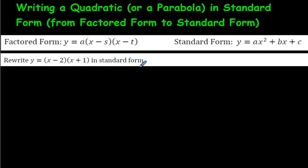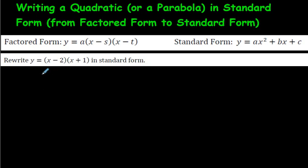What we're going to do is go from factored form into standard form. If we had a question that says 'rewrite this in standard form,' we just have to remember how to multiply two binomials. Maybe you remember your teacher talking about the FOIL method — the First, Outside, Inside, and Last — when you multiply two binomials. We're going to quickly do it as though you've already seen this before.